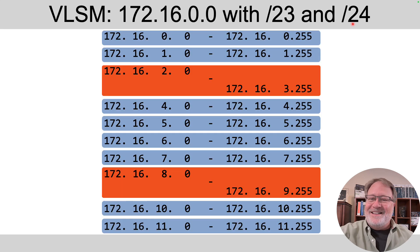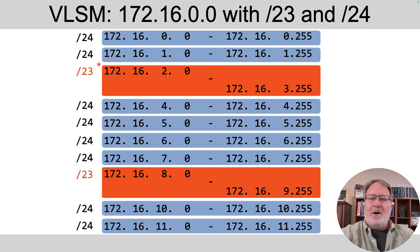So what is VLSM? Say inside this same class B network, I have a mix of slash 23 and slash 24 subnets. So these smaller blue ones, slash 24 masks, the larger orange ones, slash 23 masks.